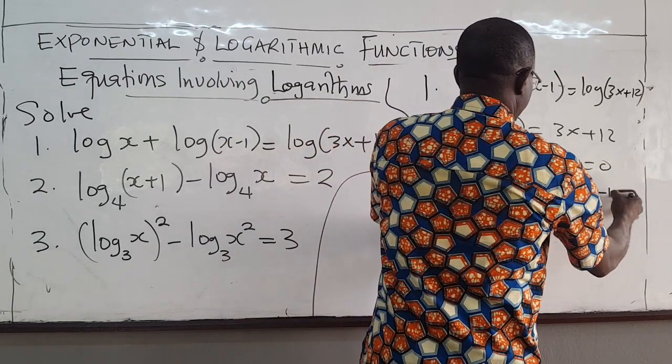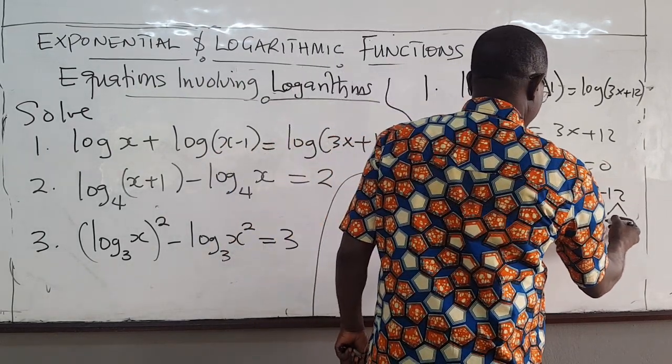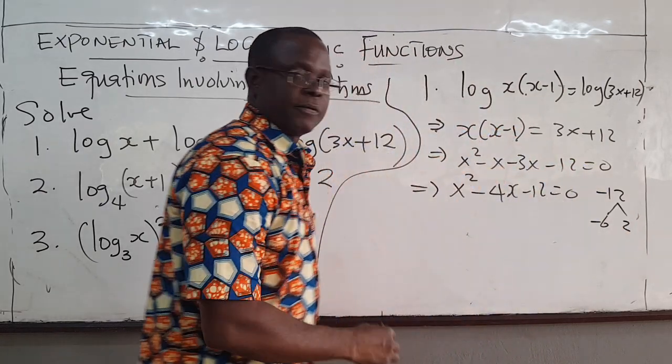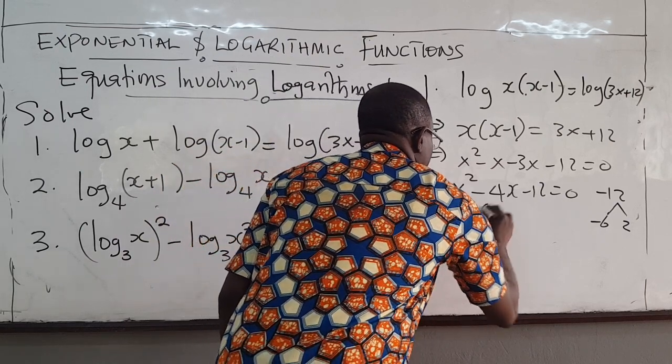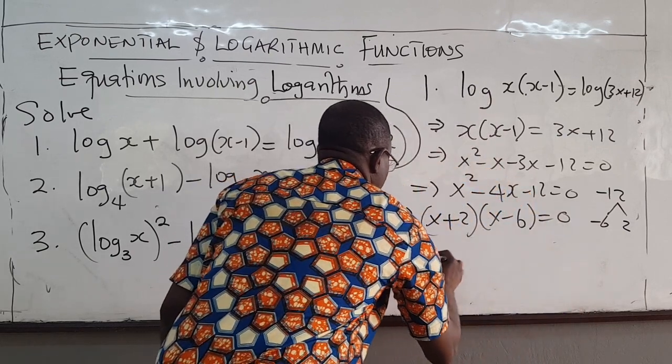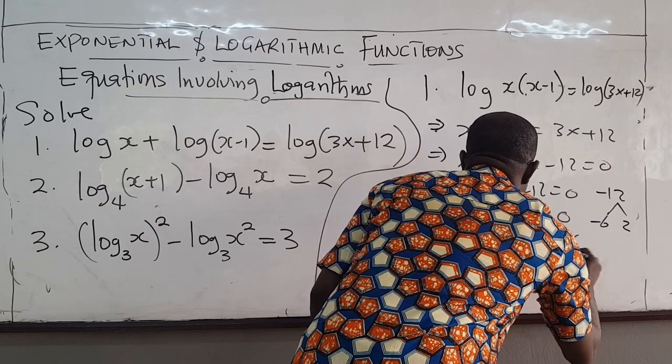We look for factors of negative 12, that will be 6 and 2. So x plus 2 times x minus 6 equals 0, so the solutions are x equals negative 2 or x equals 6.